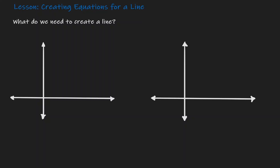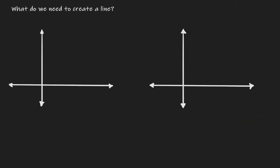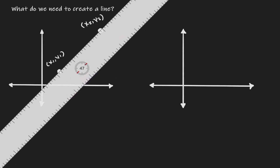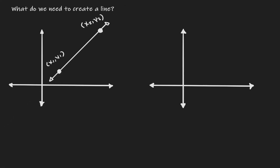Welcome. Today we'll be discussing how we can create equations for a line. So what do we need to create a line? If we have two points, let's call them x1,y1 and x2,y2 — once we have those two points, we can just connect them. So one possible way to create a line is to have two points.